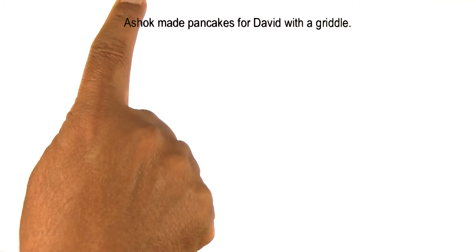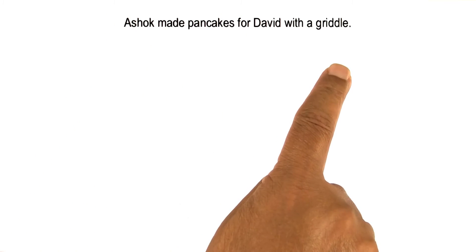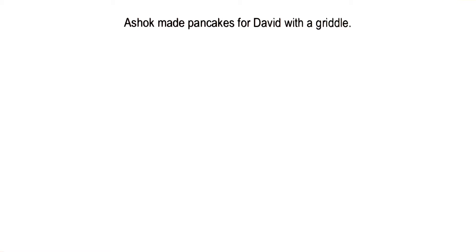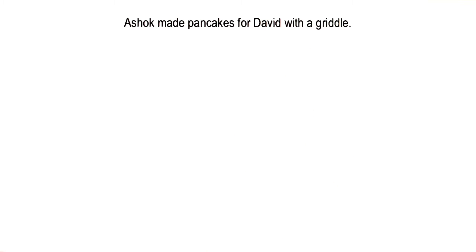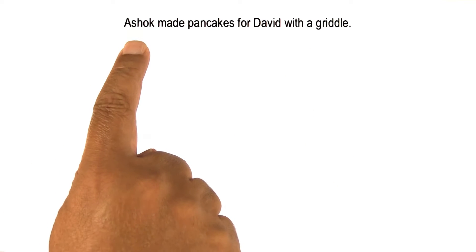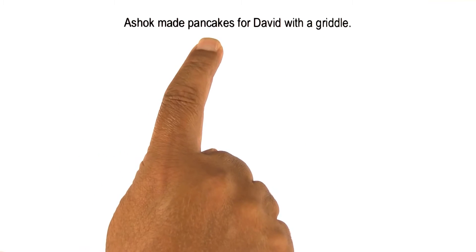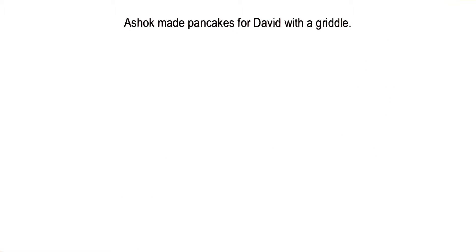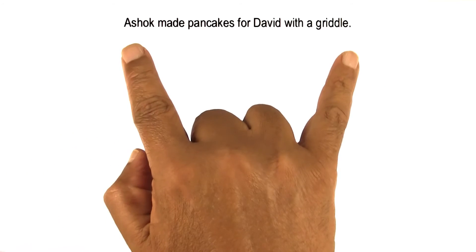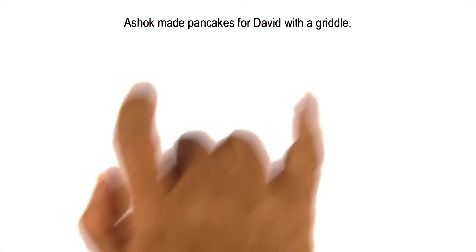We can do several different kinds of analysis on this sentence. We can do lexical analysis, which will categorize each of these words into different lexical categories. For example, Ashok is a noun, made is a verb, pancakes is a noun, and so on.